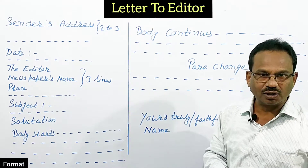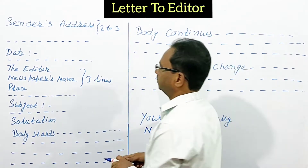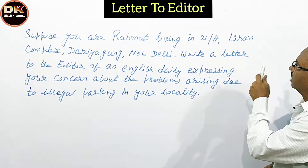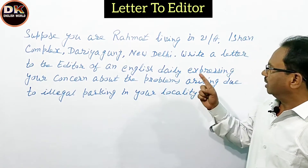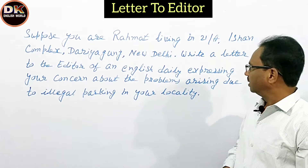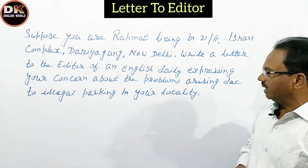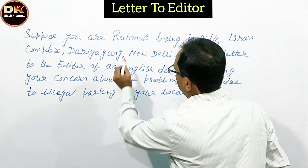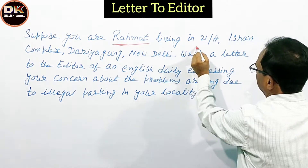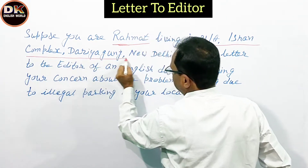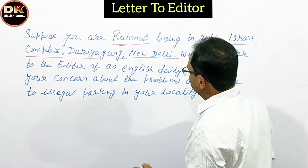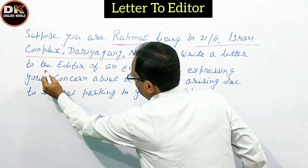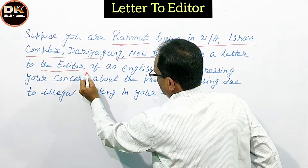Now let us take a sample question. Suppose you are Rehmat, living at 21/A, Ishan Complex, Dariya Ganj, New Delhi. Write a letter to the editor of an English daily expressing your concern about the problems arising due to illegal parking in your locality. So from the question, you can see who you are — Rehmat — and your address is 21/A, Ishan Complex, Dariya Ganj, New Delhi.